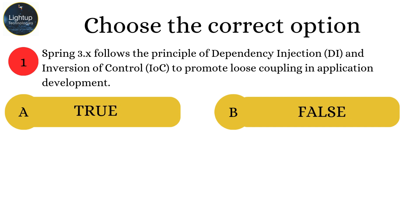Spring 3.x follows the principle of dependency injection, DI, and inversion of control, IOC, to promote loose coupling in application development.